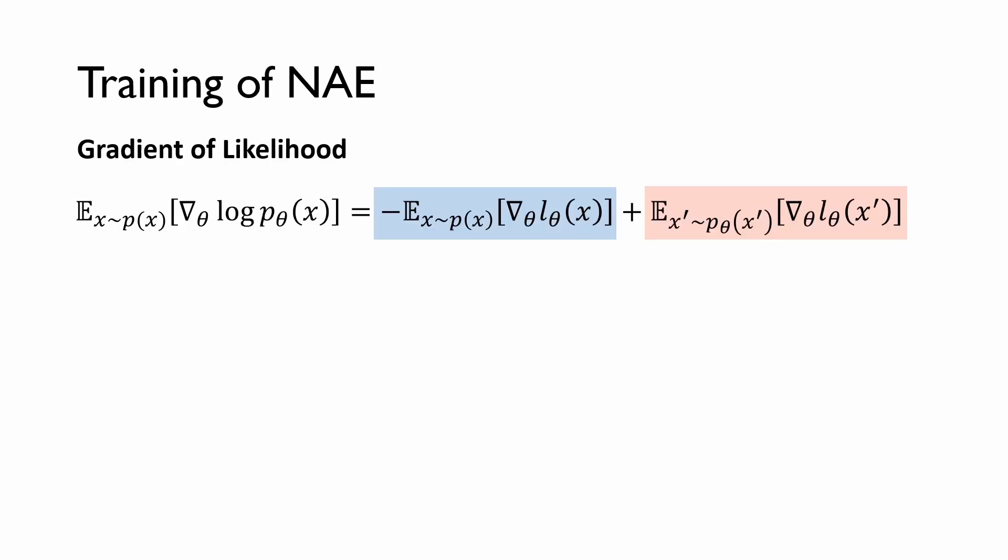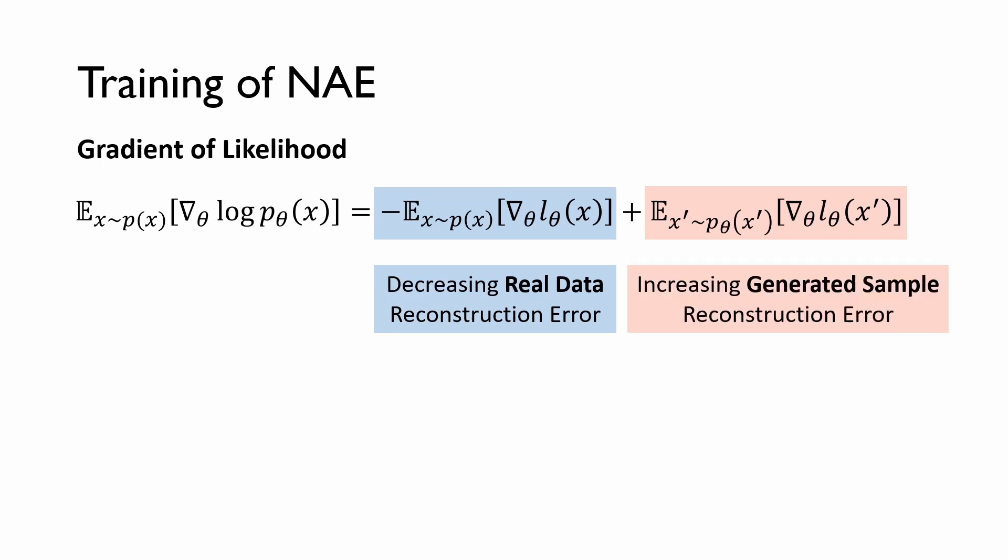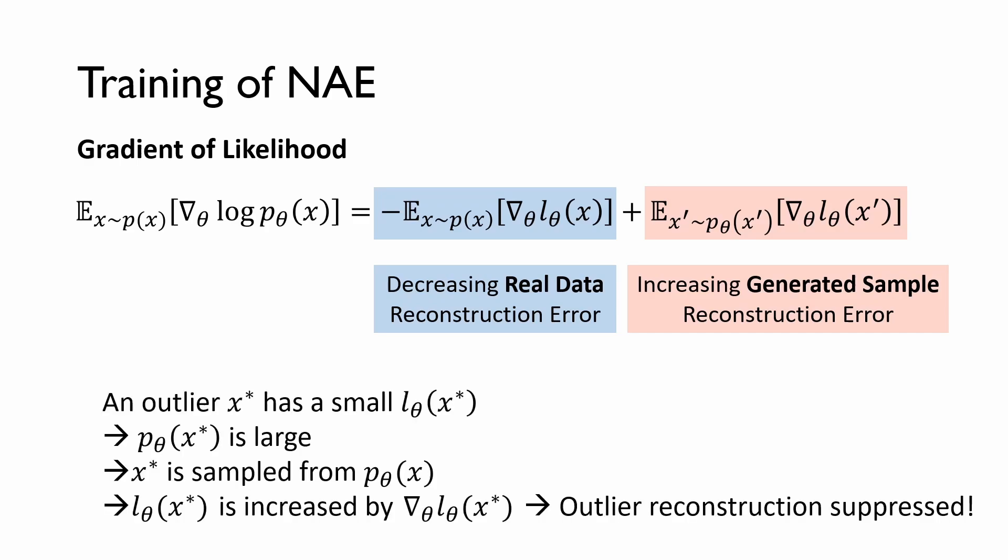To train NAE, we take the gradient of the log-likelihood. The gradient expression contains two terms. The first blue term decreases the reconstruction error of the real data, while the second pink term increases the reconstruction error of the generated sample. This gradient expression leads to a natural mechanism for increasing the reconstruction error of outliers.